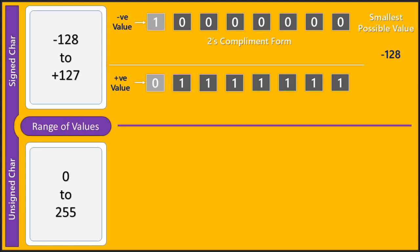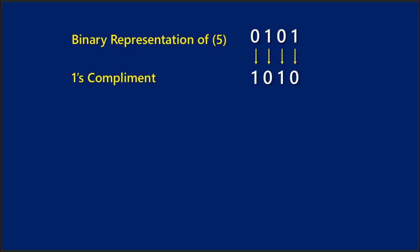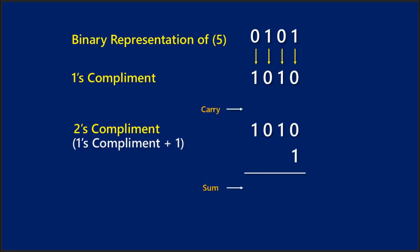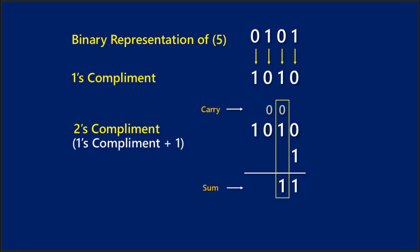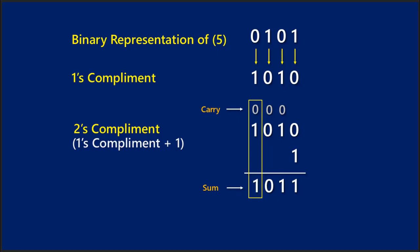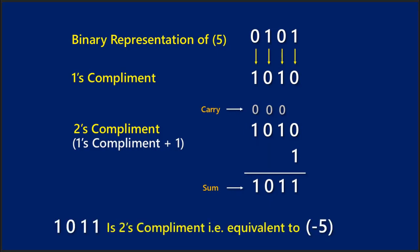To understand 2's complement, let's convert 5 into 2's complement. The binary representation of 5 is 0101. The 1's complement is 1010. To calculate 2's complement, we add 1 to the 1's complement. Performing binary addition: 1010 + 0001 gives us 1011, which is the 2's complement and is equivalent to -5.